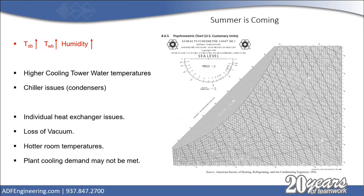You'll get hotter room temperatures, which isn't necessarily a process issue, but it could affect your users, especially your operators. Overall, these hotter temperatures mean that your plant cooling demand may not be met.